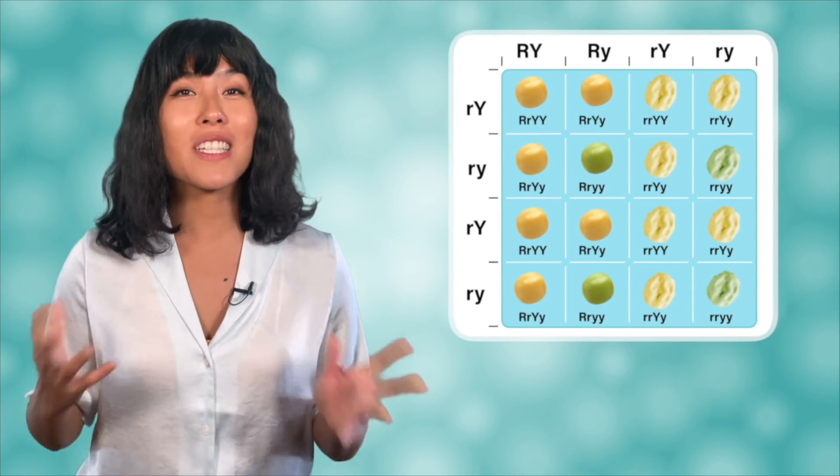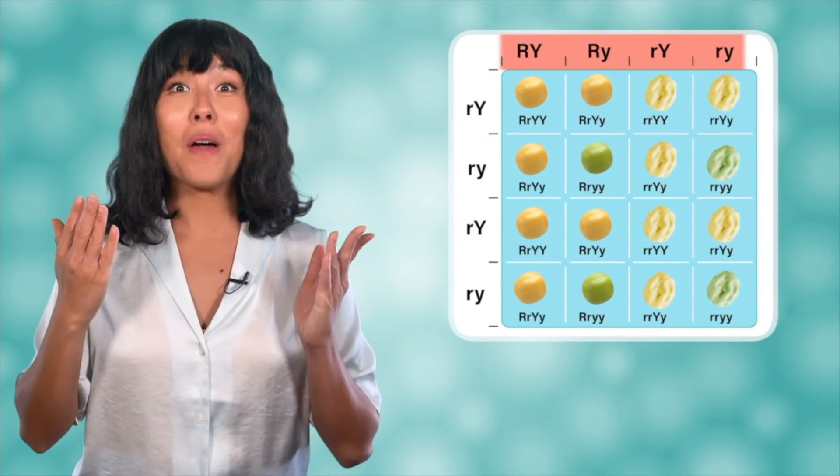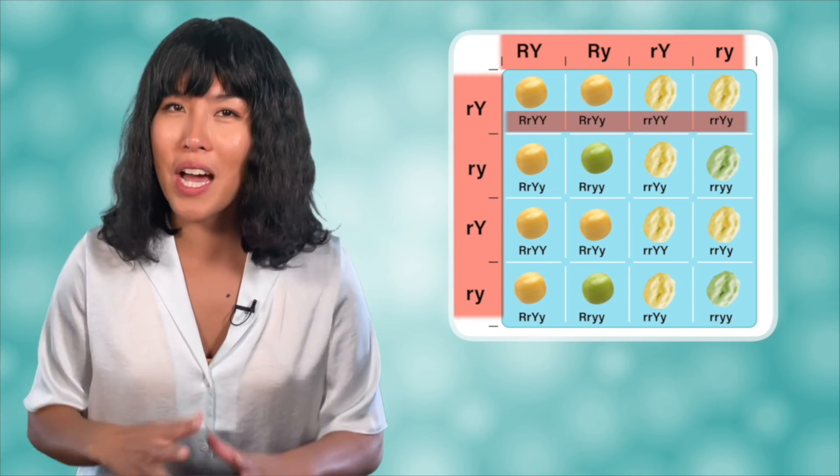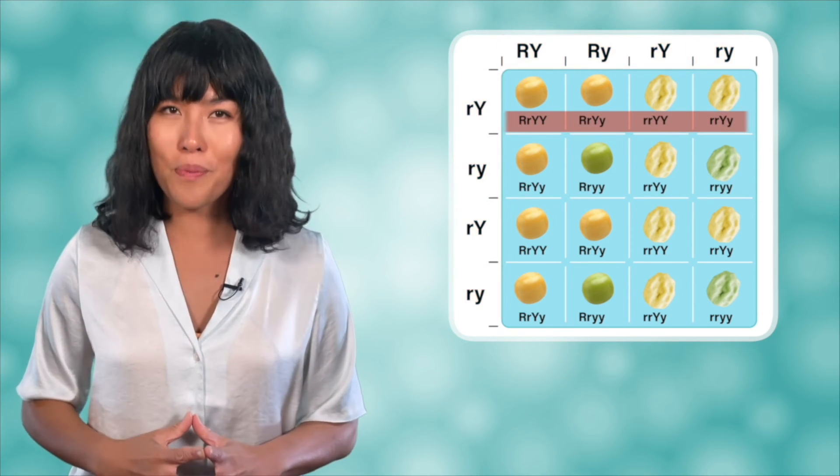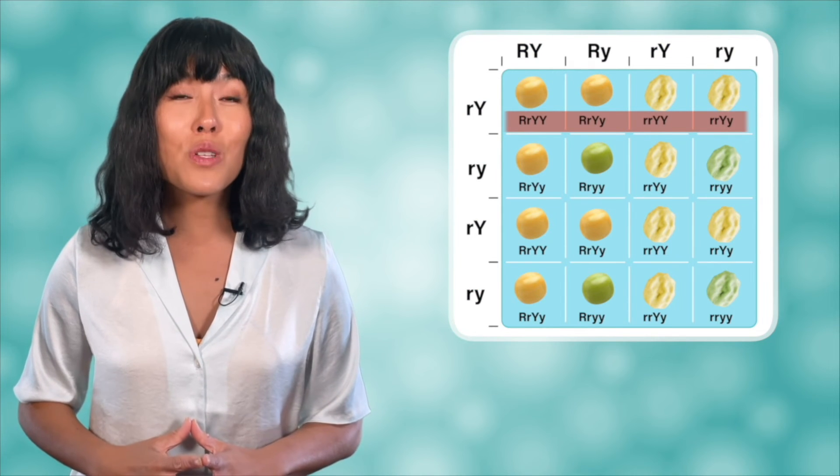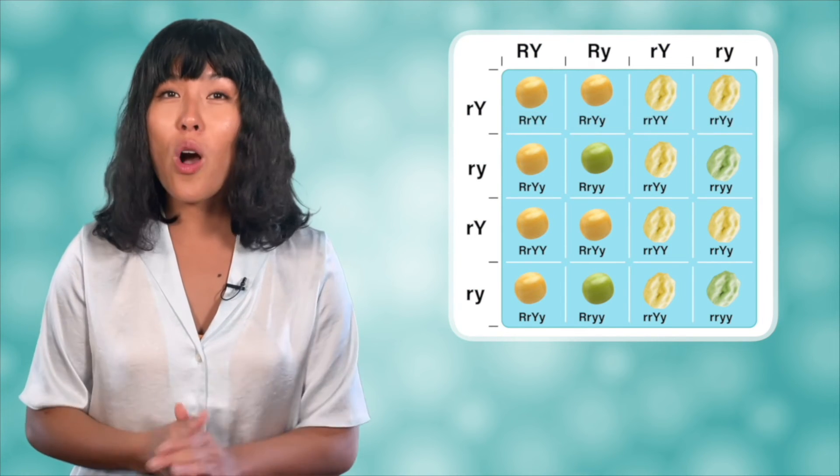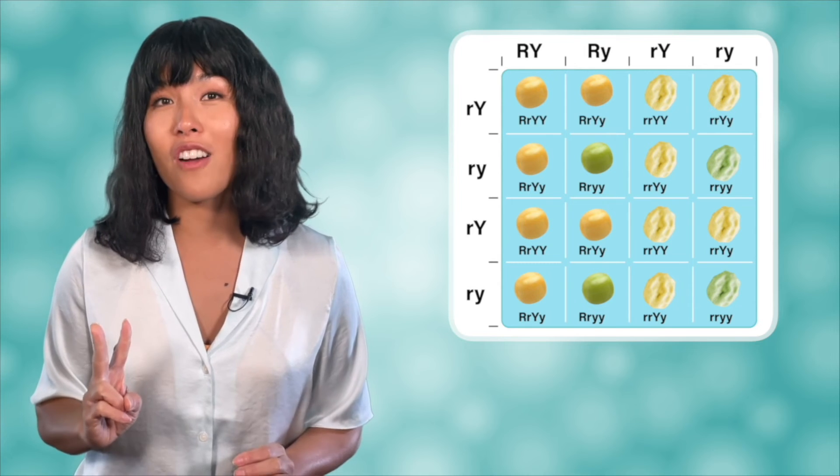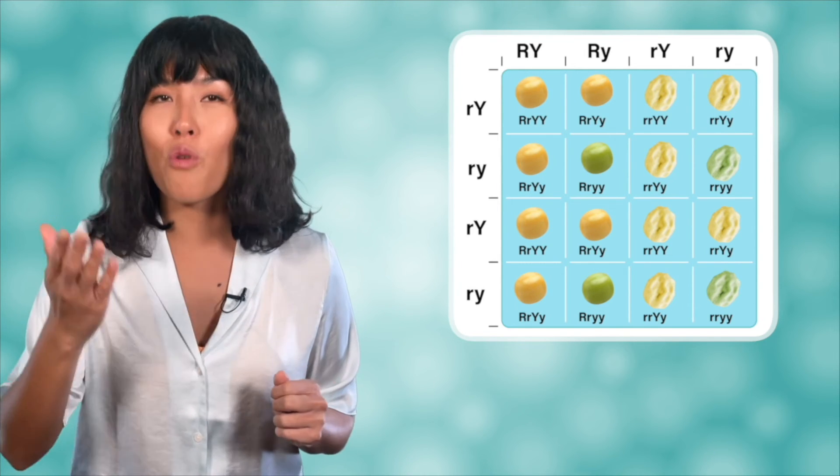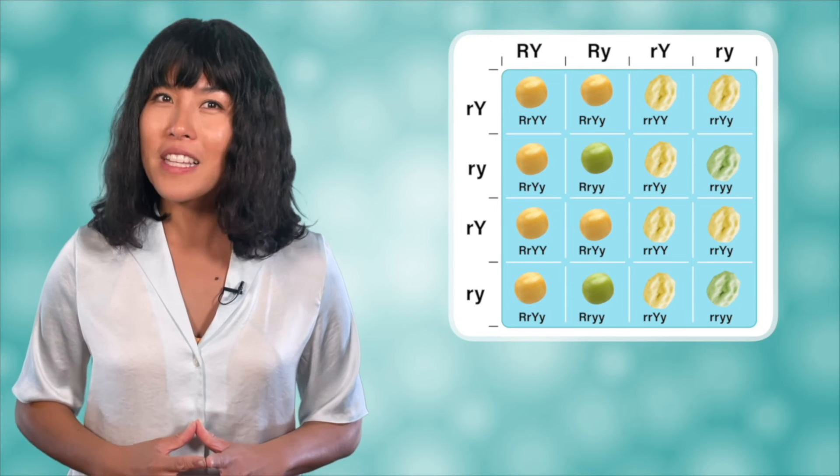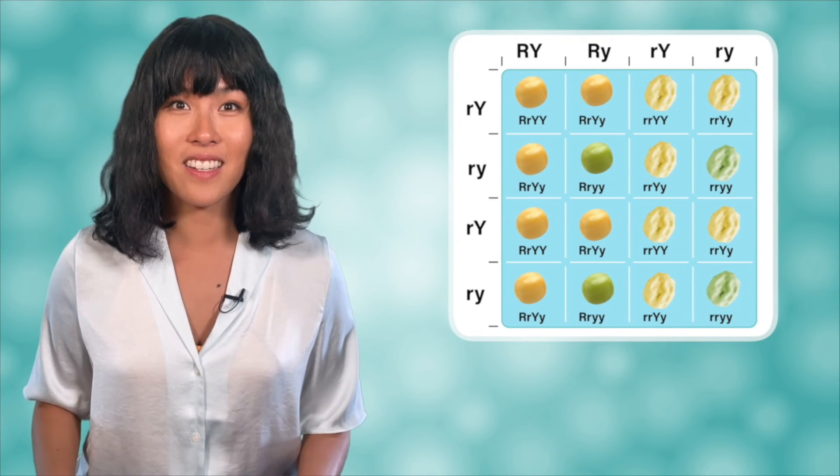Filling in the table works just like before. Look up and look left and copy down what you see. We won't go through all 16 individual boxes, but here are the results you would get. We always pair up the two versions of R and then the two versions of Y, and big letters come before small letters.